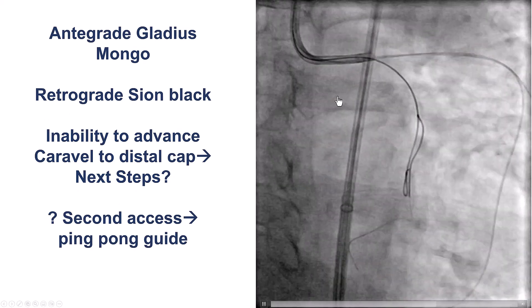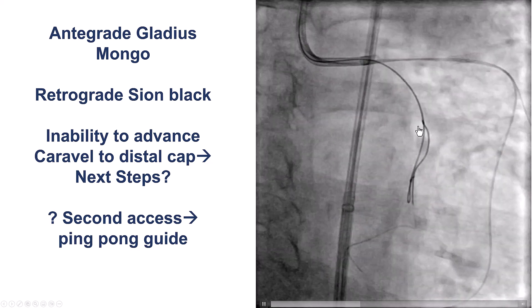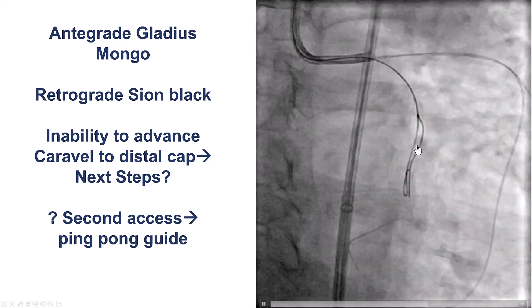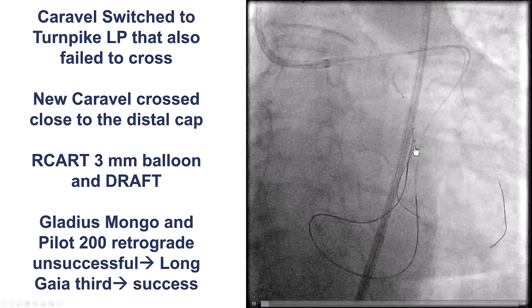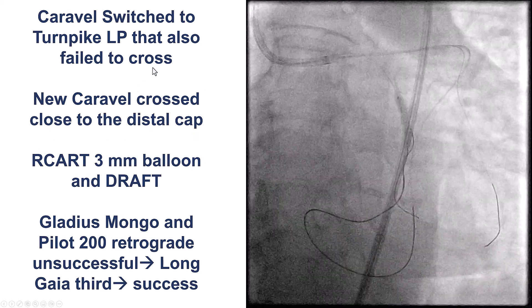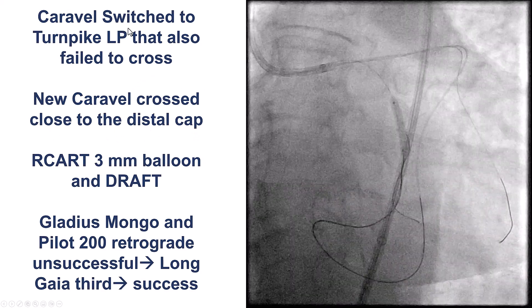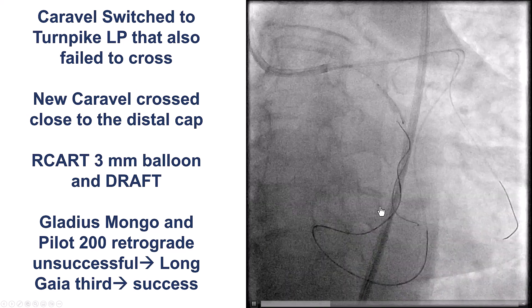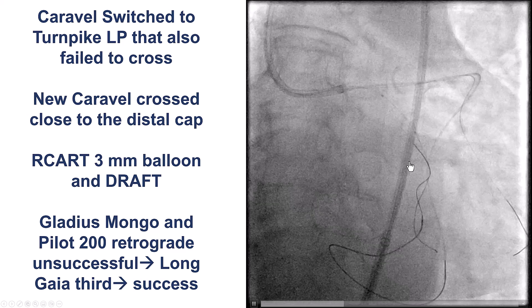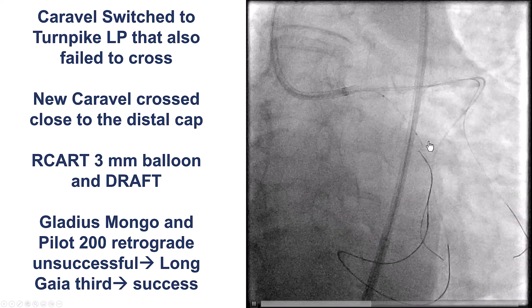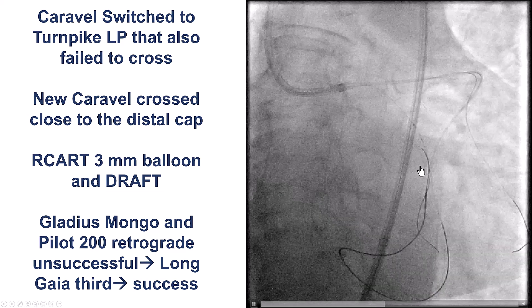We were stuck at this difficult distal cap. What we ended up doing was using a new Caravelle microcatheter, which was able to be advanced essentially all the way to the distal cap. Now we had wires in the distal true lumen and also an antegrade wire overlapping.